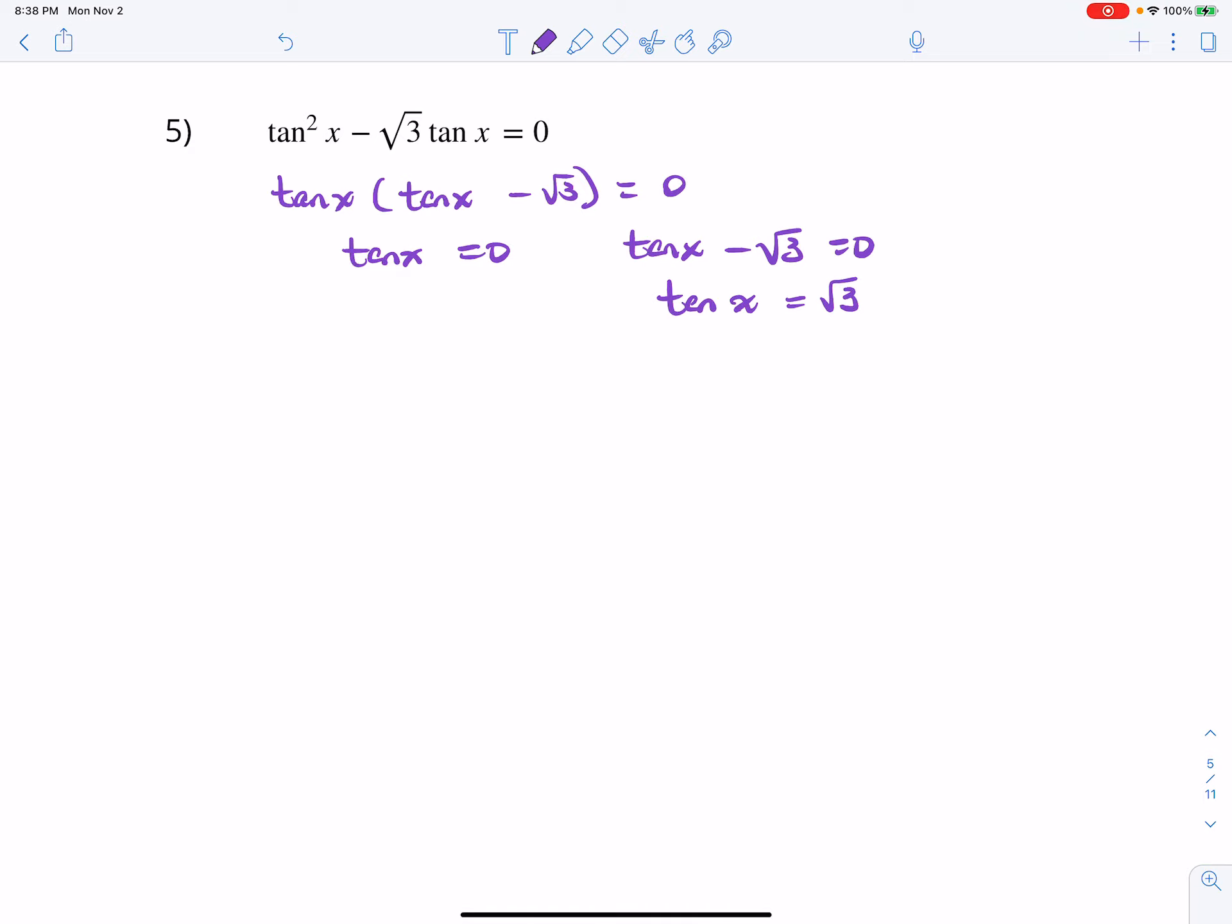Remember that tangent of x equal to zero. Now, tangent was the graph that looked like the EKG, basically, right? So, it had a fundamental period from negative pi over 2 to pi over 2. And this is 3 pi over 2. Bottom line is there were two intercepts at zero and pi.